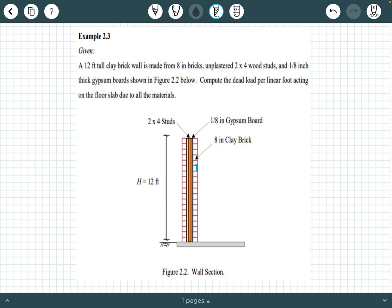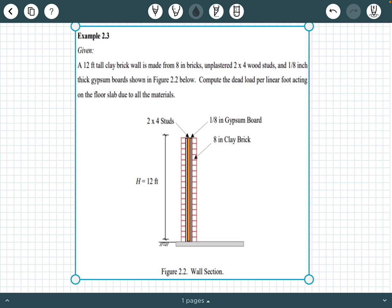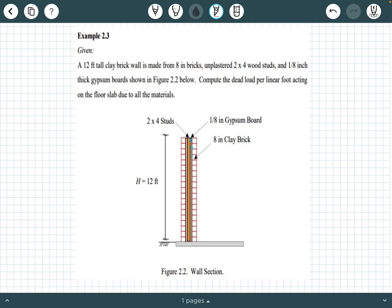We also have the 8 inch clay bricks on both sides of the wall, we have unplastered 2x4 wood studs going up the middle of the wall, and we have two layers of the 1/8 inch thick gypsum board, shown here in this wall section.